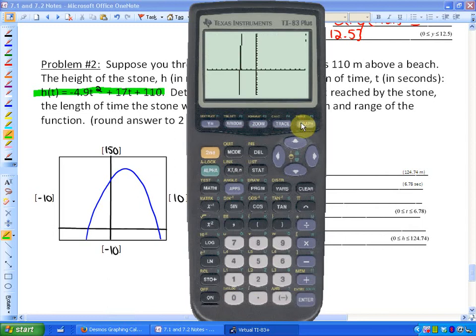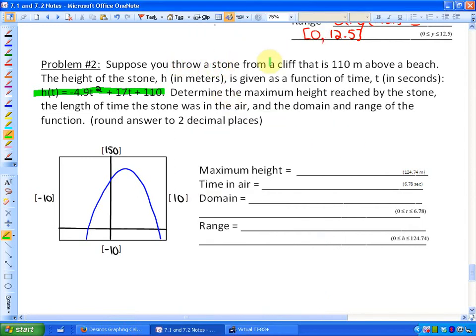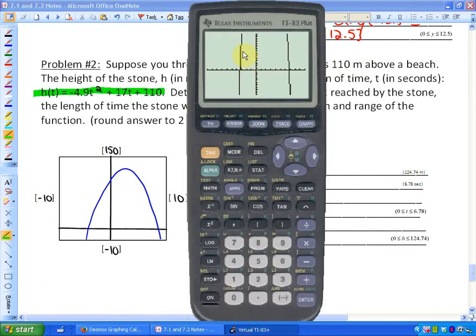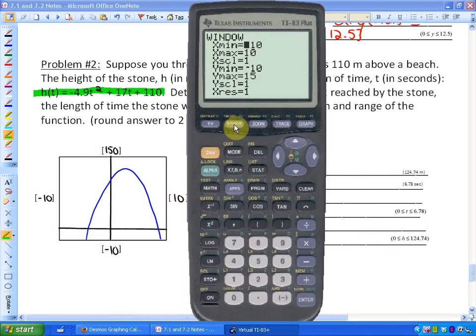At this point in time, since the stone was thrown from a cliff that was 110 meters above the beach, it may be expected that I can't see the top of this function. I can just see the beginning and end of the function, but not the top or the vertex of the function. Now I'm going to want, since I know that the y-intercept is 110, I'm going to want a window. So I can press window. I want to see much higher. I'm going to change my y maximum to 150 and see if that works.